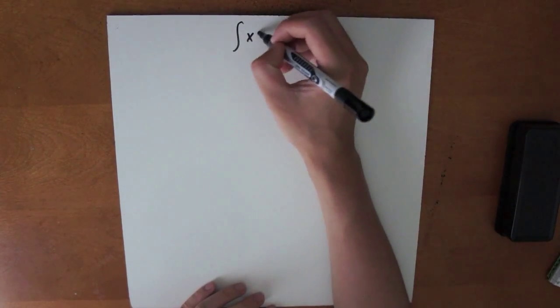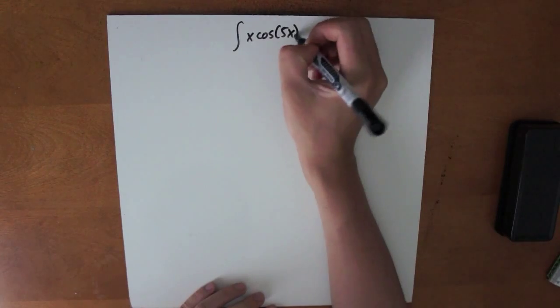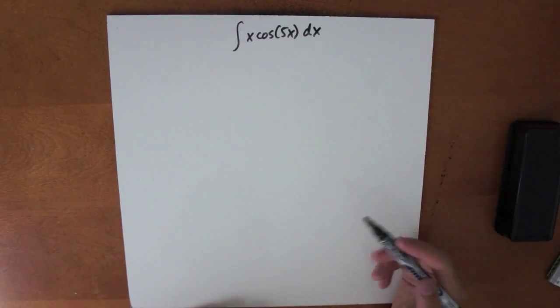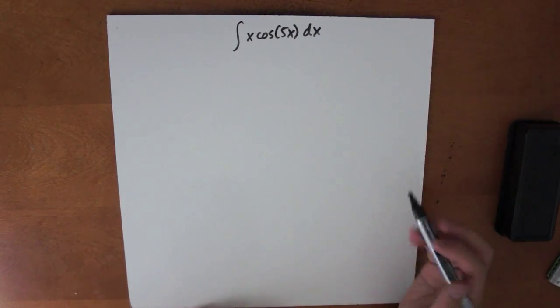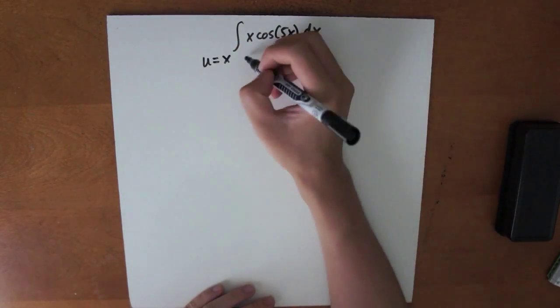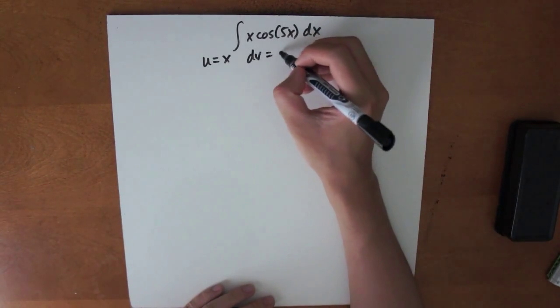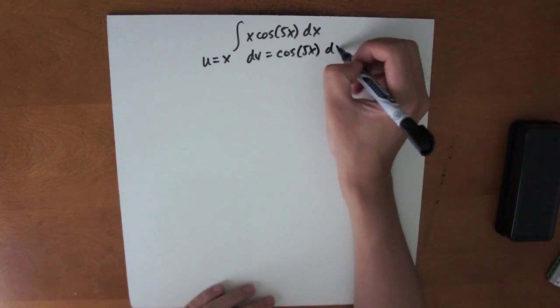Now let's try an example. Let's try the integral of x cosine 5x dx. Since polynomials come before trigonometric functions in LIATE, we choose our u to be equal to x. And our dv is just the remaining part of the integral, that would be cosine 5x dx.